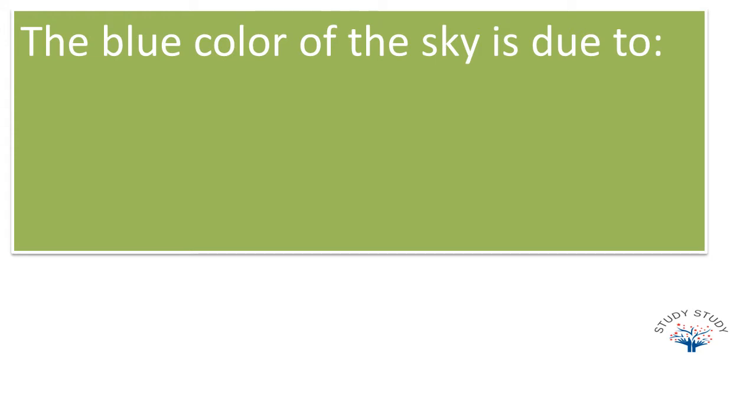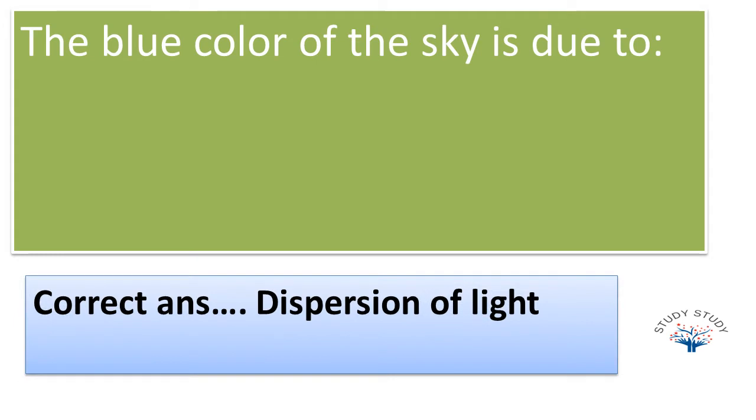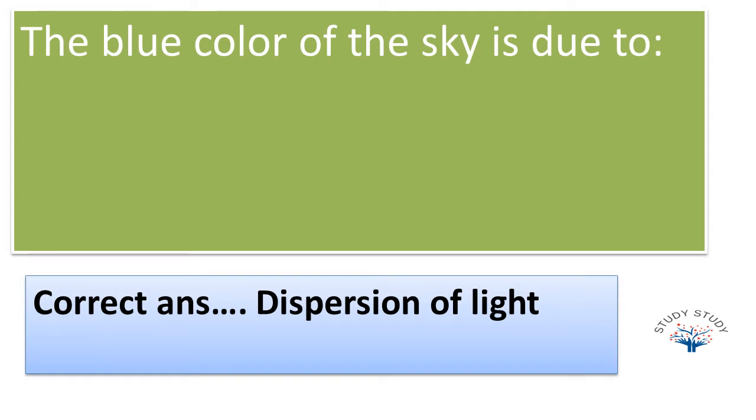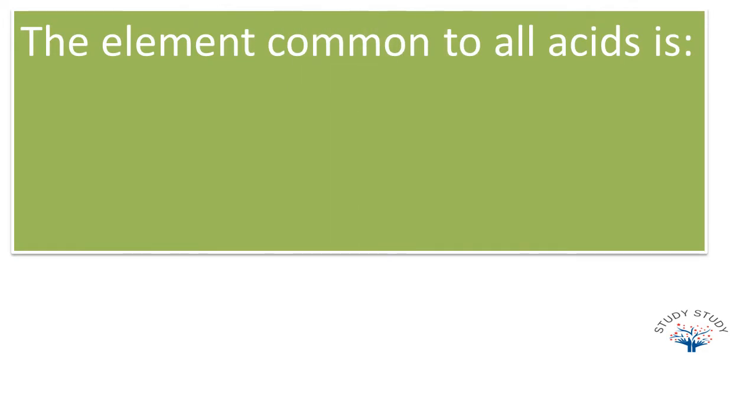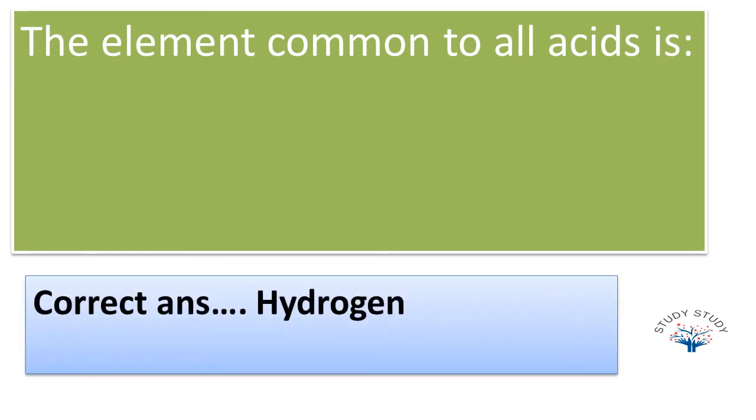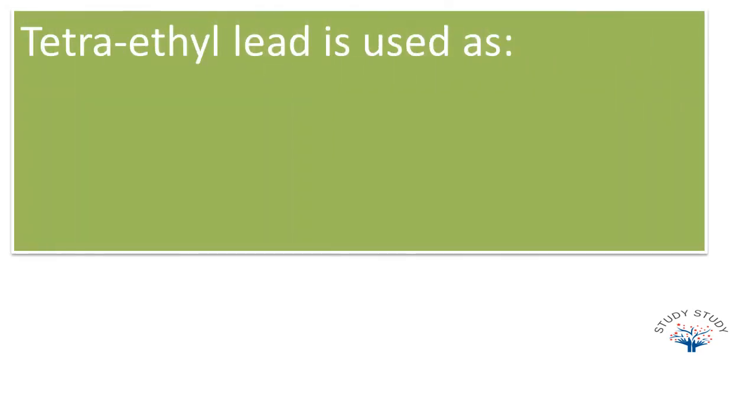Color of sky is due to - the correct answer is dispersion of light. Next question: the element common to all acids is - the correct answer is hydrogen. Next, ethyl lead is used as: